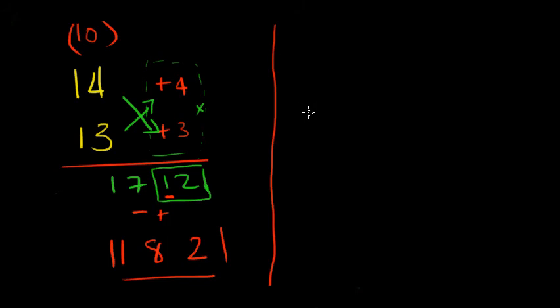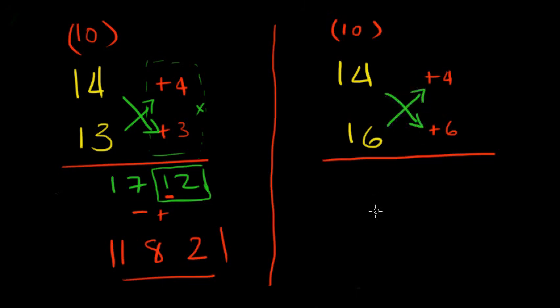Let's do a couple more so you understand properly. 14 times 16, so what do we get? Base is 10, this is plus 4, and this is plus 6. So either 14 plus 6, or 16 plus 4. So that gives us, 16 plus 4 is 20, and 4 into 6 is 24. So adding 0 and 2, you get 2, 2, 4. There's your answer.